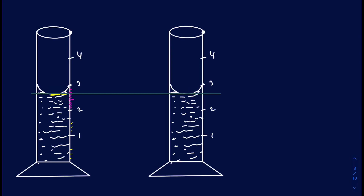Let's take another example with two graduated cylinders — let's call them 1 and 2. Both measure milliliters, but the first one also has ten small lines between each milliliter marking. For simplicity, those small lines are drawn between the 2 and 3 mL marks, which is where our liquid is. As a result, the first graduated cylinder can measure to 0.1 milliliters — the tenth of a milliliter — directly off the instrument. The second graduated cylinder does not offer that level of accuracy.